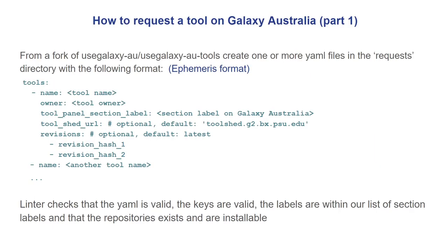Each new tool shared repository on Galaxy Australia is added as a result of a pull request. You can make a pull request for a tool on Galaxy Australia by adding a file in the requests directory. We use the Ephemeris format for these files, since we are using Ephemeris for installing and testing.